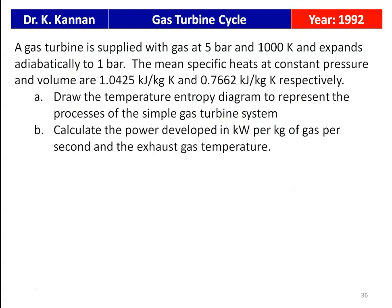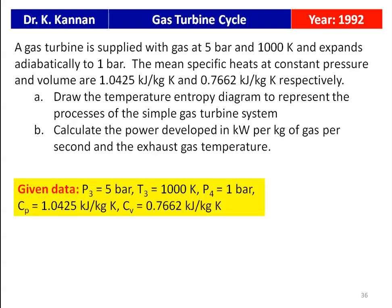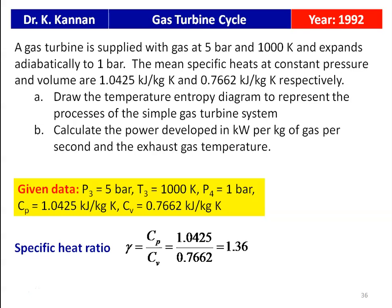The next question is from the 1992 question paper. A gas turbine is supplied with gas at 5 bar and 1000 K and expands adiabatically to 1 bar. Mean specific heats at constant pressure and volume are 1.0425 kJ/kg·K and 0.7662 kJ/kg·K respectively. The specific heat ratio γ = Cp/Cv = 1.0425 / 0.7662 = 1.36. Draw the temperature-entropy diagram and calculate the power developed per kg of gas per second and the exhaust gas temperature.